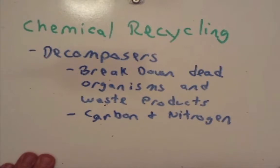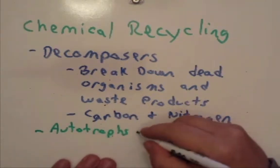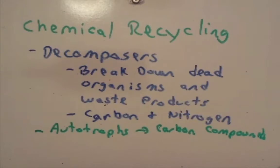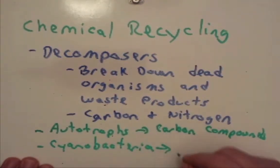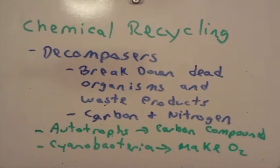Another important role in chemical recycling is that autotrophs make carbon compounds like sugars. As these autotrophs, like cyanobacteria, are consumed, that carbon and those sugars they make move up the food chain. In addition, microbes such as cyanobacteria, which undergo photosynthesis, generate oxygen that other aerobic organisms use. These are just some of the ways that bacteria help in the chemical recycling of compounds that we need to continue to have life as we know it on earth.